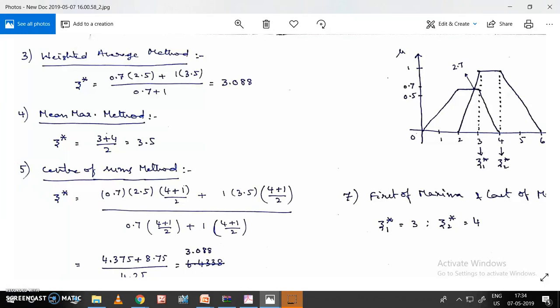This is how we find the weighted average method. First, identify the maximum value of one fuzzy set and identify the average of the range where it runs. It's running from 2 to 3, so the average is 2.5.